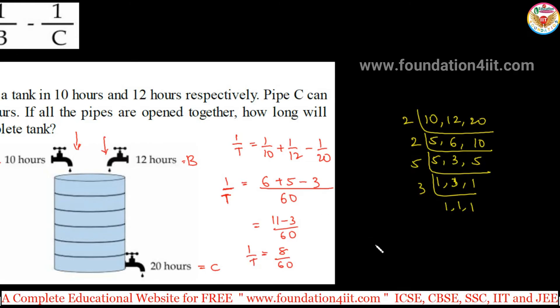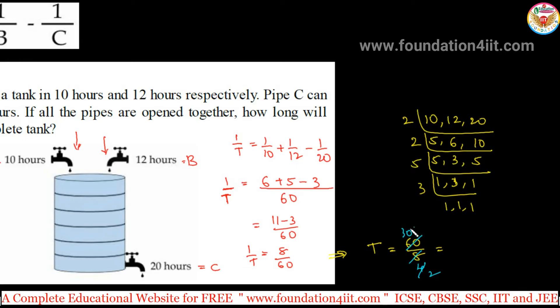We need only T, so take the reciprocal. If you do the reciprocal, then T equals 60 by 8. Let's simplify: divide by 4 to get 30/2, then by 2 to get 15/2, which is 7 and a half hours, or 7.5 hours, or 7 hours 30 minutes.